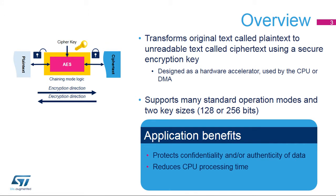The AES algorithm is a symmetric block cipher used to encrypt and decrypt information using a secret cryptographic key that is 128 or 256 bits long. Encryption converts data to an unintelligible format called ciphertext, while decrypting converts the ciphertext back to its original format called plaintext. The AES peripheral is a NIST FIPS 197 compliant implementation of the AES algorithm, more efficient than a software library in terms of processing time.